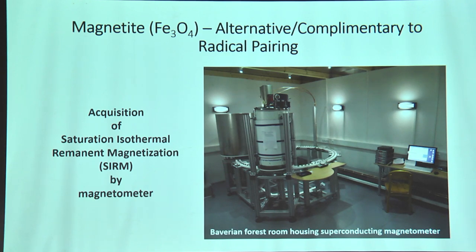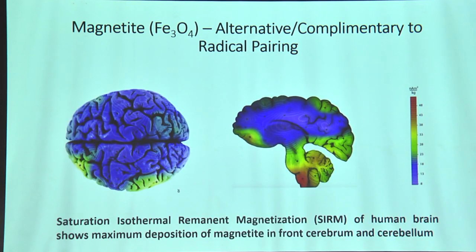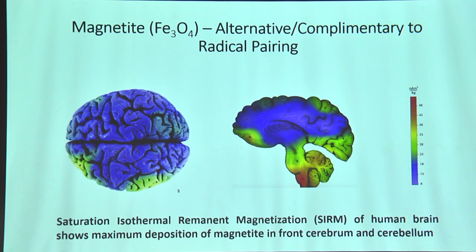These magnetite crystals were found in brain samples from post-mortem studies of multiple humans, acquired in the Bavarian Forest, 80 kilometers from Munich in Germany. This map shows the deposition of magnetite crystals in the frontal cerebrum as well as the cerebellum. To understand this, they measured the saturation isothermal remanent magnetization — the net spin of total magnetite ions present — in brain tissue.